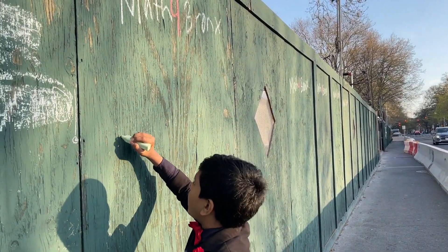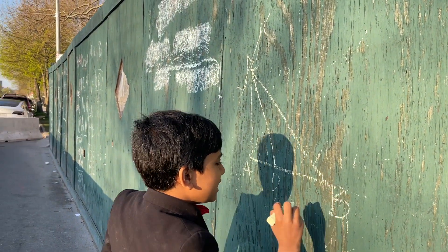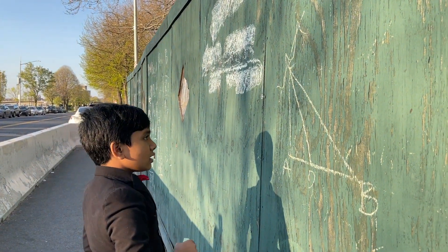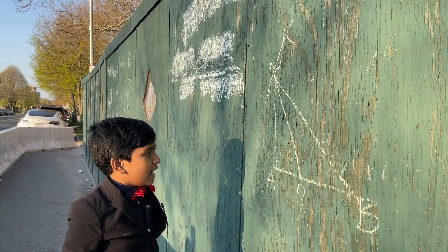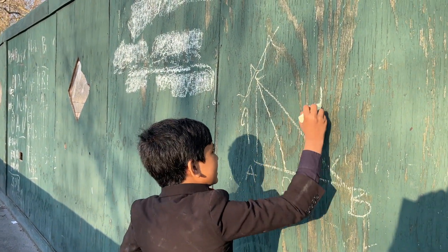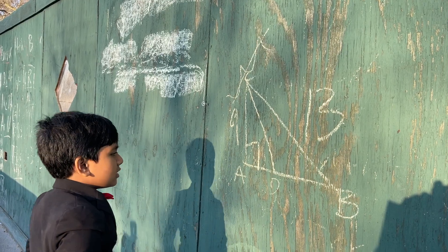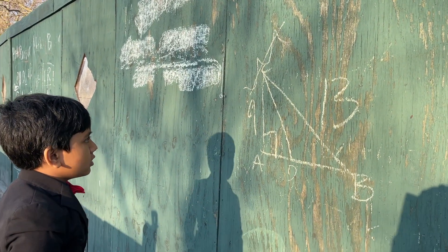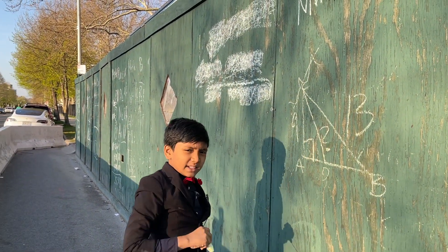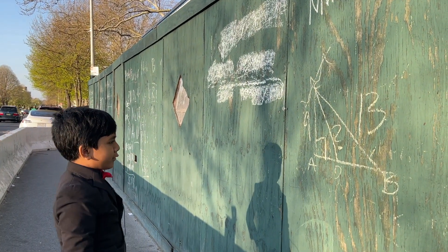Alright, so this vertex over here is A, this is B, and this is C. The only information we have is this is 9, this is 13, and this is a right triangle. We're trying to find what CD is. It's actually decently easy, even though we only have three givens.